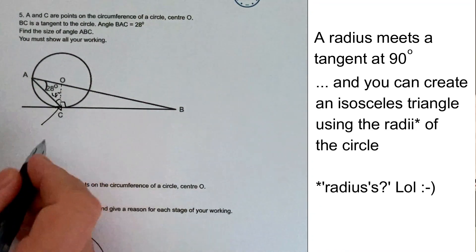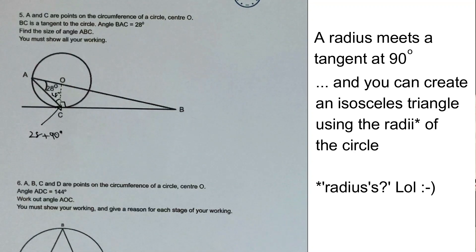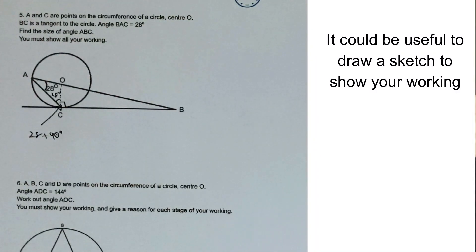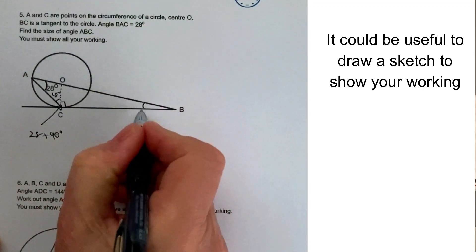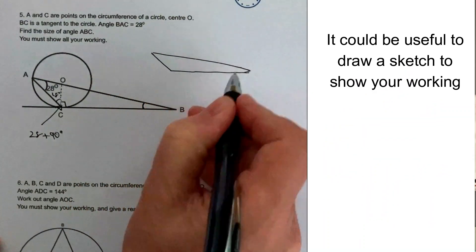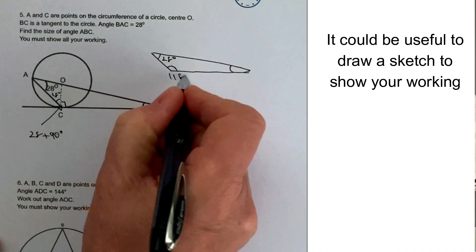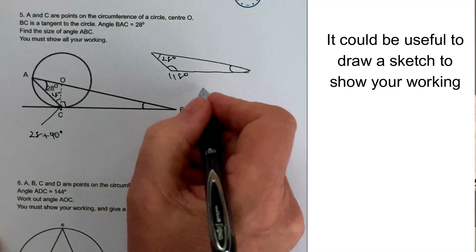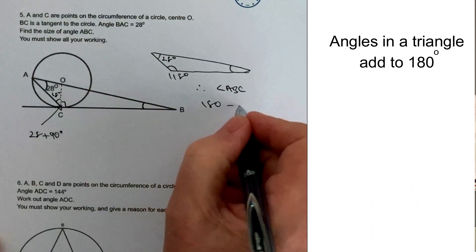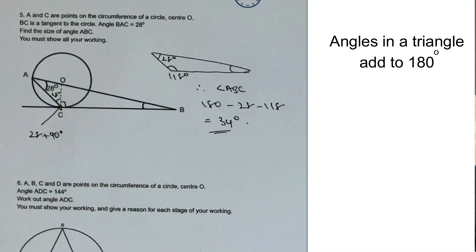We know this angle is 28 degrees, so this angle here is going to be 28 plus 90 degrees, giving 118 degrees. We now know two of the three angles of this triangle. So angle ABC is going to be 180 — angles in a triangle — minus 28, minus 118, which equals 34 degrees. That's the answer to that question.